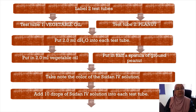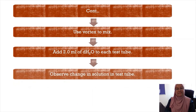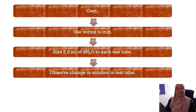This is the final procedure to determine the presence of lipid. Label two test tubes: test tube one for vegetable oil, test tube two for peanut. Place 2 ml of water in both test tubes. In test tube one, put in 2 ml of vegetable oil; in test tube two, put in half a spatula of ground peanut. Take note of the color of the Sudan IV solution and add 10 drops into each test tube. Mix both test tubes using a vortex mixer, then add 2 ml of water to each test tube and observe any changes.